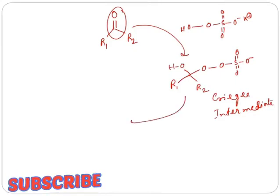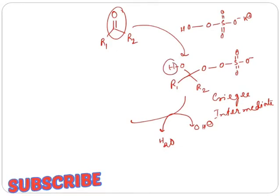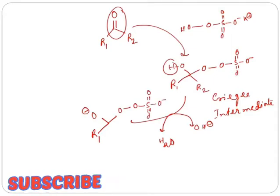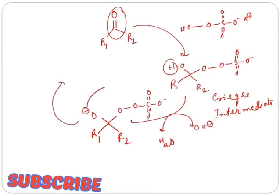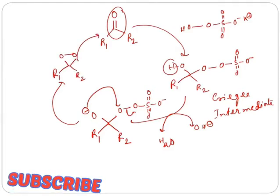This is called Criegee intermediate. Now under the presence of hydroxide anion, this proton will be deprotonated to give this intermediate.